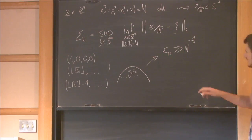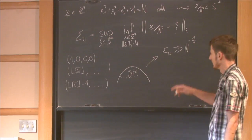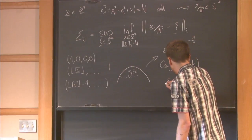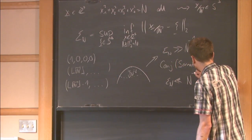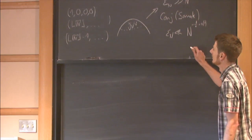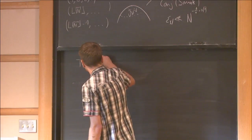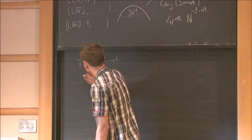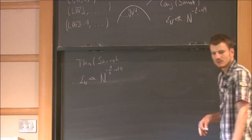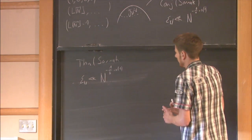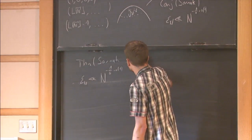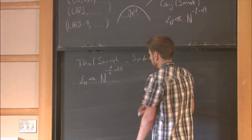Sarnak conjectures that this is the only restriction on the size of epsilon_n — namely that epsilon_n should be bounded by n to the minus 1/4 plus little-o of 1. What Sarnak is able to prove is that epsilon_n is bounded by n to the minus 1/6 plus little-o of 1, using the theory of automorphic forms for the quaternion algebra and the Linnik estimate for Hecke eigenvalues. I should also mention Sodari, who recovers this result using the circle method.